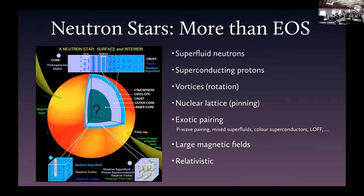Neutron stars have a lot more information than just the equation of state because they're rotating and dynamical, with superfluids inside and vortices. A particularly interesting effect is that many neutron stars have a hotspot — as they rotate, that hotspot emits light, and we see these as pulsars. These stars are about 15 kilometers in radius, have about one to two solar masses inside, and yet they're spinning at milliseconds. They're really quite crazy objects.